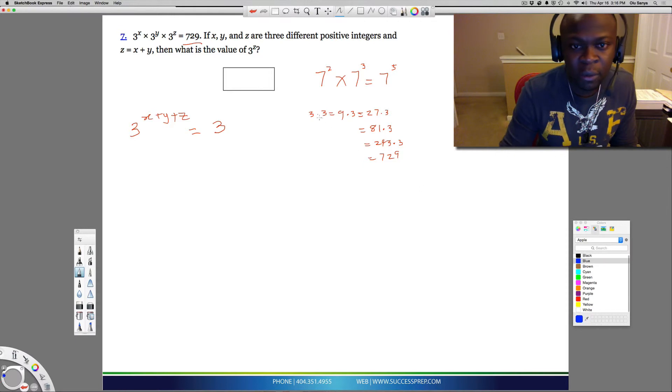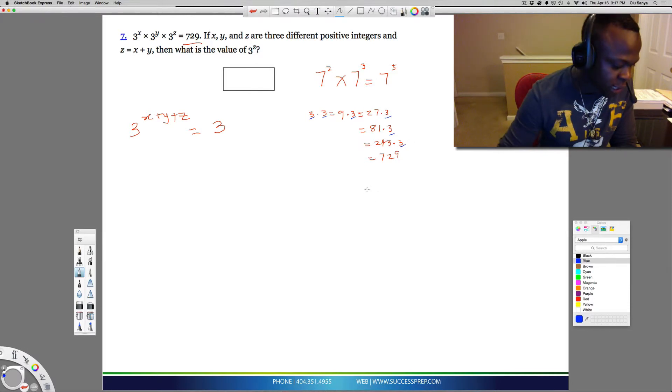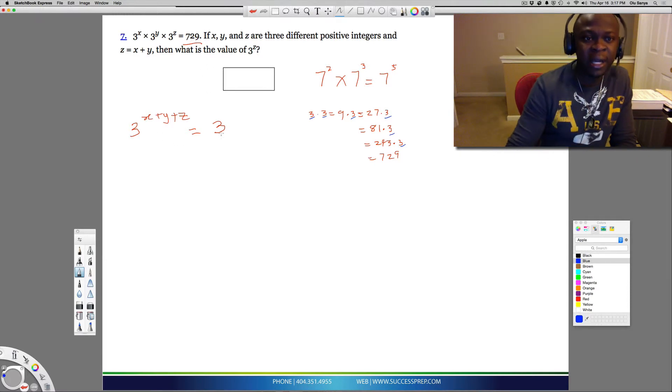So the question then is, how many 3s do we have here? Well, we have 1, 2, 3, 4, 5, 6. So we have 6 3s that made up the 729. So in effect, instead of writing 729, I really need to be writing 3 to the 6.